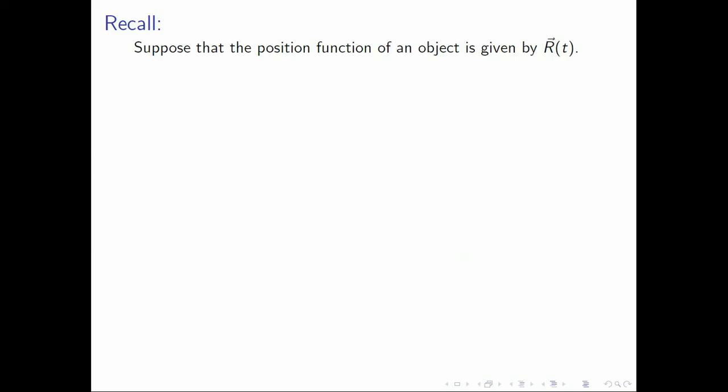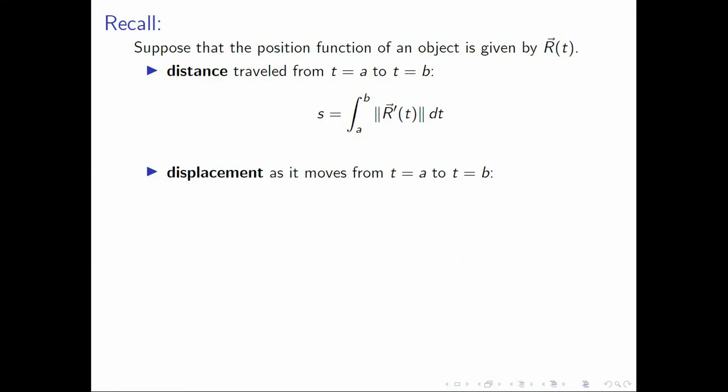Let us suppose that the position function of an object is given by the vector-valued function r of t. Then the distance traveled by the object from t equals a to t equals b is given by the arc length of the graph of our position function from a to b. The displacement, on the other hand, as it moves from t equals a to t equals b is the vector r of b minus r of a.